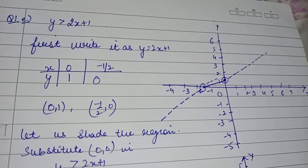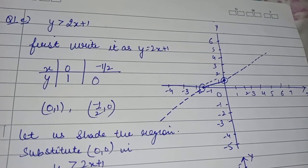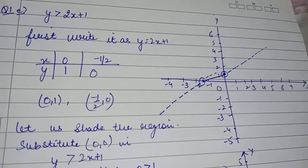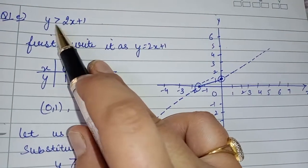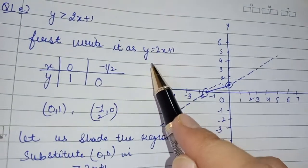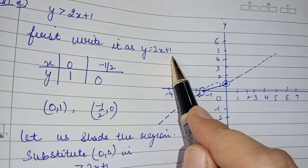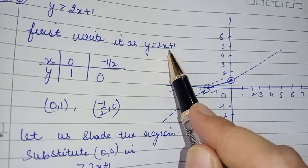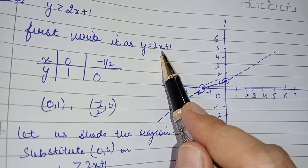Firstly, you have to convert the inequality into equality. So the inequality sign will be replaced by an equal-to sign: y is equal to 2x plus 1. Now we will draw this line on the graph.